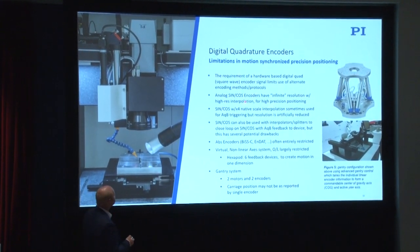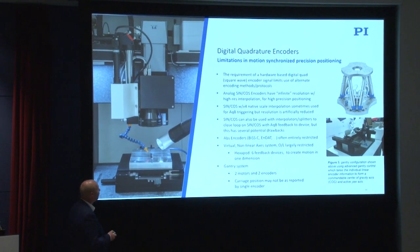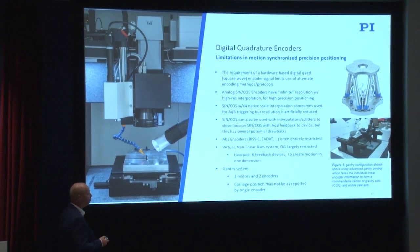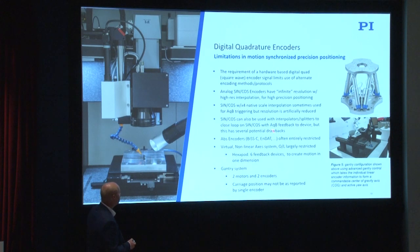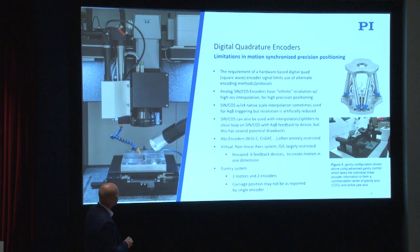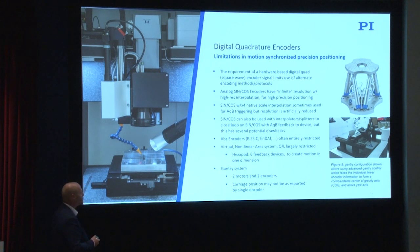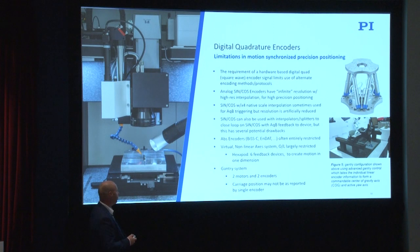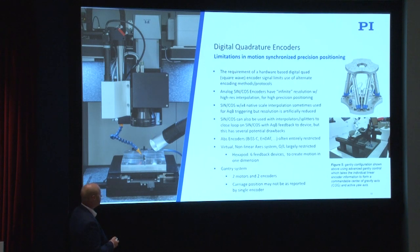This requirement for a hardware-based digital quad really starts to limit the use of other encoding methods and protocols — absolute and sine cosine. Analog encoders have very high resolution, but we restrict that ability by being limited to the pitch of the encoder with quadrature. Using interpolators and splitters to handle sine cosine becomes messy, and in many cases you can't even use absolute encoders — they're just totally restricted — even though they offer safety and other advantages.